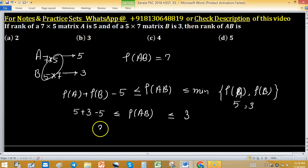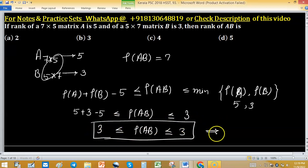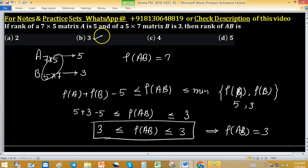That's why we get 3 ≤ rank of AB ≤ 3. So this inequality implies that rank of AB is 3. Option B is correct.